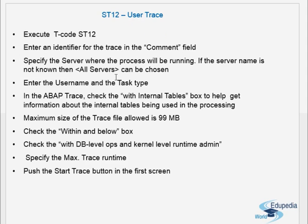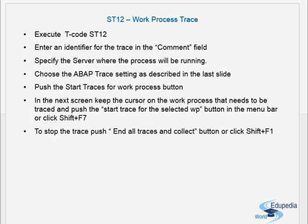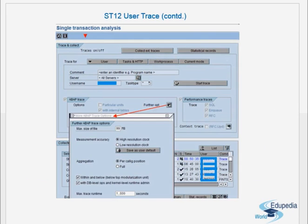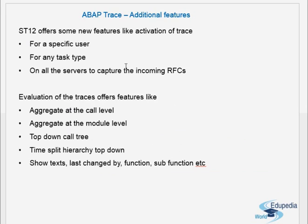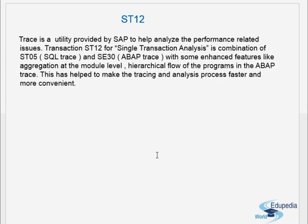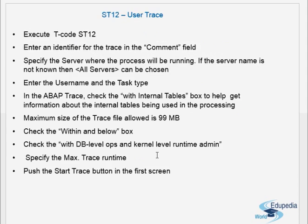We can collect the user trace and the work process trace — these are the two options in ST12. With the user trace, we know the user ID and want to know all activity that user is doing. With the work process trace, whether it's a dialogue, background, or update process, we can collect the trace for that work process. These are all the features of ST12 trace — aggregation at the call level and module level — giving us a wider view to pinpoint exactly where the problem is. This is about the procedure for SAP performance trace. Thank you.